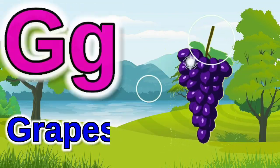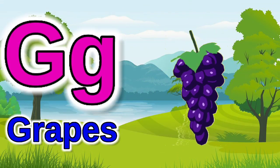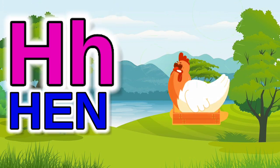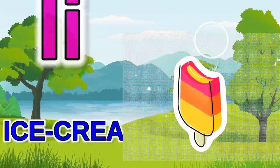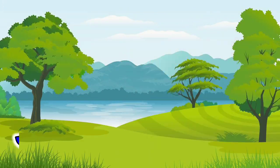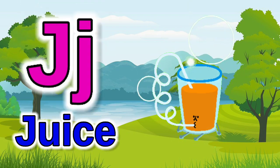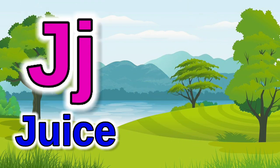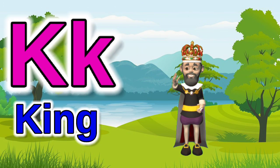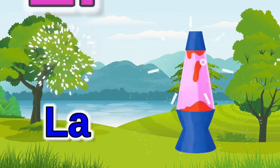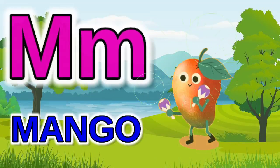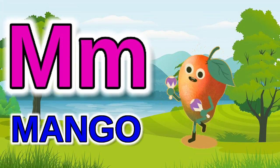G for grapes, H for hen, I for ice cream, J for juice, K for king, L for lamb.